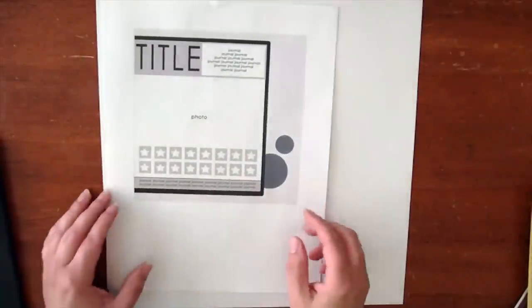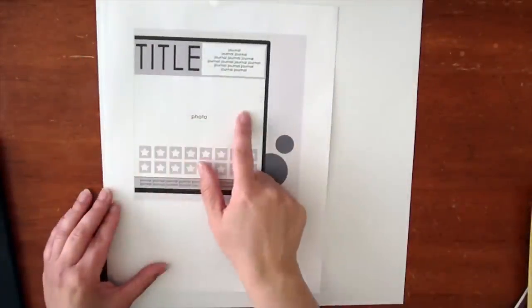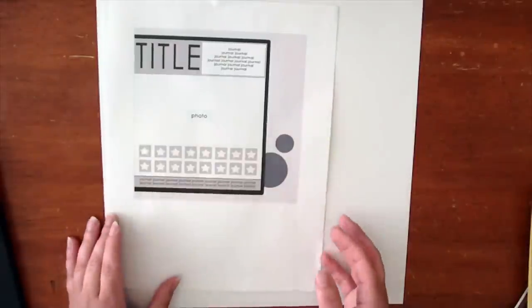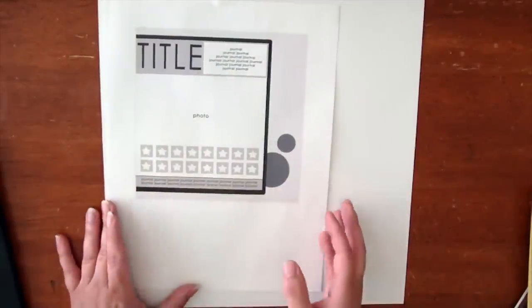This month's sketch is a 12x12 sketch. It indicates a large photo on a 12x12 sheet. I'm going to show you how you can stretch the sketch a little bit.